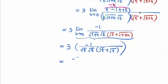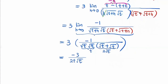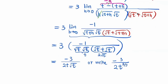That gives us negative 3 over — square root of t times square root of t is t, and then we also have 2 times square root of t — so the denominator is 2t times square root of t. You can leave it like this, or you can write it in exponential form: negative 3 over 2, times t to the 3-halves power, since t to the first times t to the one-half is t to the three-halves.